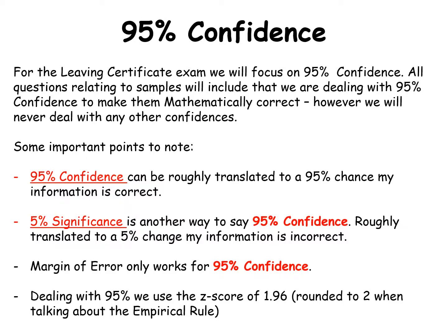As you go on and study statistics in more detail you'll see other things appear, but for the moment we're sticking to 95% confidence. Now these are not the mathematical definitions of 95% confidence — this is just a way to help you grasp what's going on. When we talk about 95% confidence this can be very roughly translated as a 95% chance my information is correct. We then will see 5% significance, which is just another way to say 95% confidence, and roughly translated it means a 5% chance that my information is incorrect.